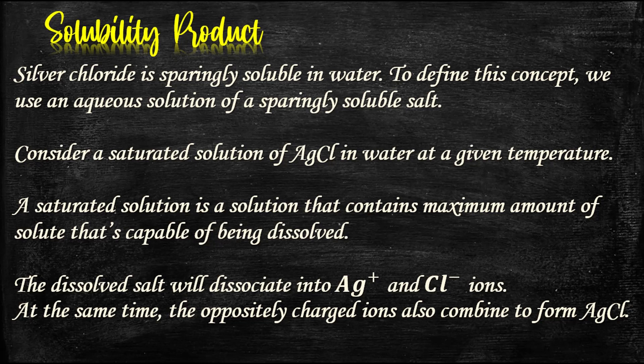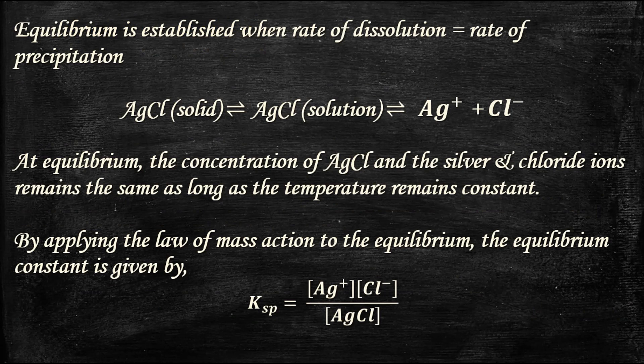The dissolved salt will dissociate into Ag⁺ and Cl⁻ ions. At the same time, the oppositely charged ions also combine to form AgCl. Equilibrium is established when the rate of dissolution is equal to the rate of precipitation. Therefore, AgCl solid is in equilibrium with AgCl in solution form, which is in equilibrium with Ag⁺ and Cl⁻ dissociated as ions.